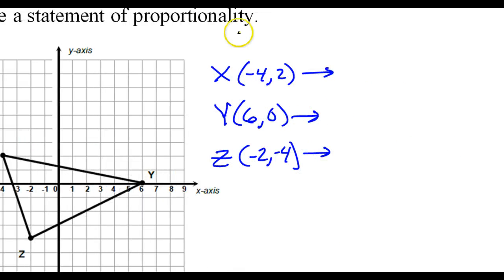Okay, with a scale factor of 0.5, that means we are multiplying everything by a half. So x prime, I'm just dividing these by 2. So this will become negative 2 and 1. And y prime is going to be 3 comma 0. And z prime is going to be negative 1 comma negative 2.